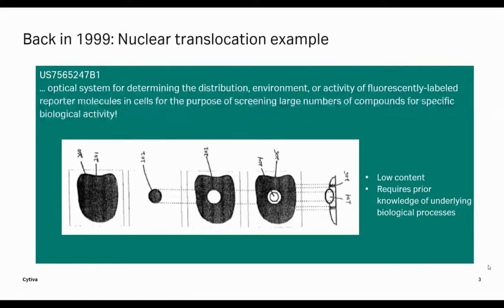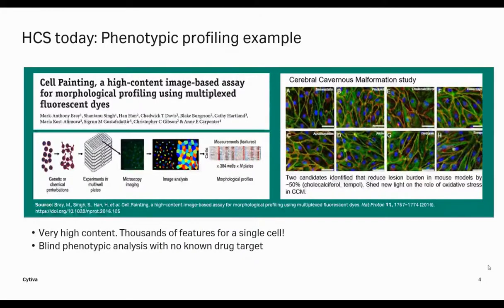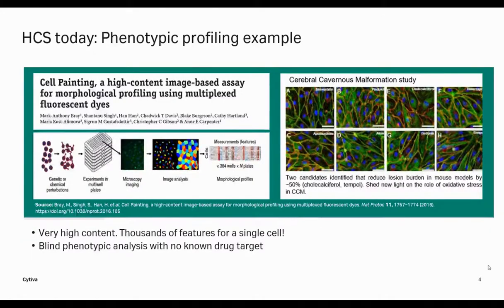If we go back and look at the first example from the actual patent for high content analysis, we see that it's actually quite low content — nothing more than a nuclear translocation assay. It's valuable in itself, but it's a pretty simplistic way to look at how biology responds to things like small molecule perturbation or genetic modifications. Flashing forward to today, the work is much more comprehensive, leveraging all the content in the image as opposed to just a single feature.